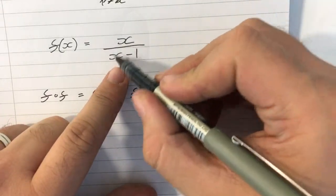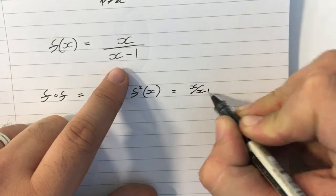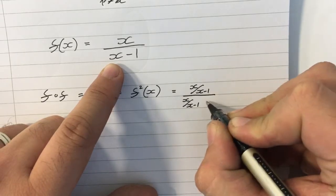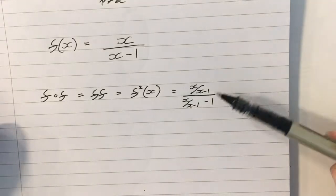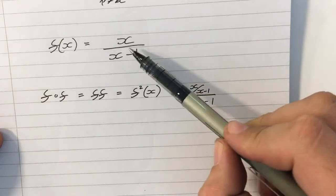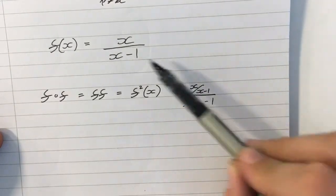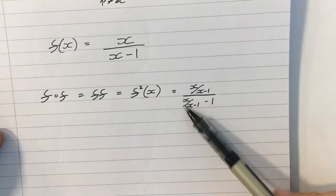So whenever I see an x, I'm going to write x over x minus 1. So x over x minus 1 divided by x over x minus 1 minus 1. It might take a little bit of thinking for you to understand how that's the composite, but whenever I see an x, I write x over x minus 1. So this x here becomes x over x minus 1, and this x here becomes x over x minus 1.